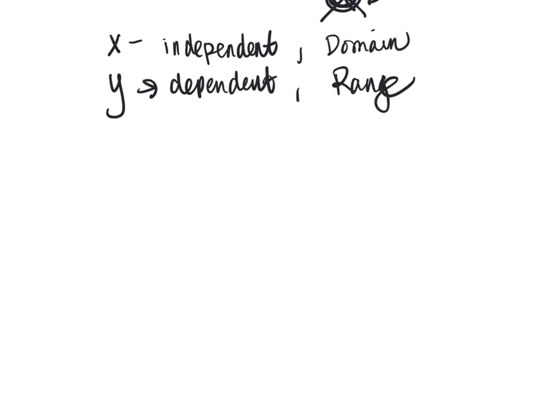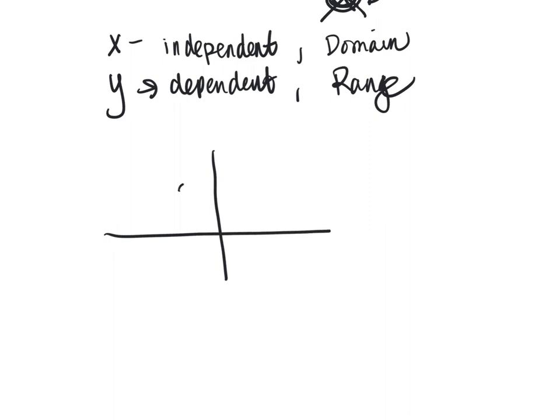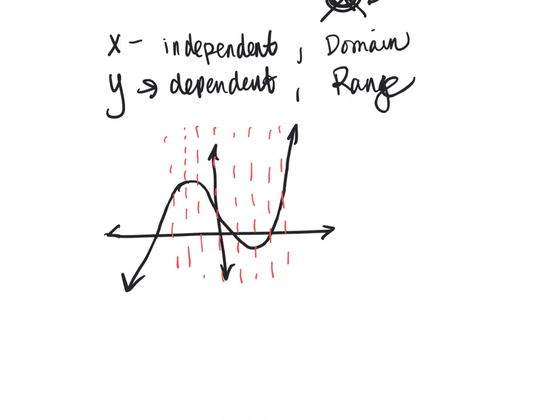If something is on a graph and it's a function, then it will pass what is known as the vertical line test. That means no matter where I draw a vertical line, I will at most touch one point. It's possible to have a function that I don't touch any points. Let's take a look at the function y equals 1 over x. At most, I only touch one point, passing the vertical line test. But there is this vertical line right here at 0 where I don't touch any points, and that just means that 0 is not in the domain. But it is still a function.